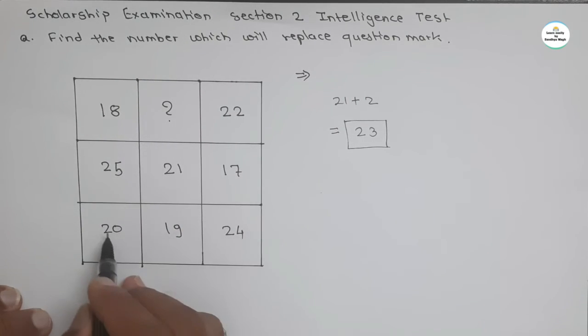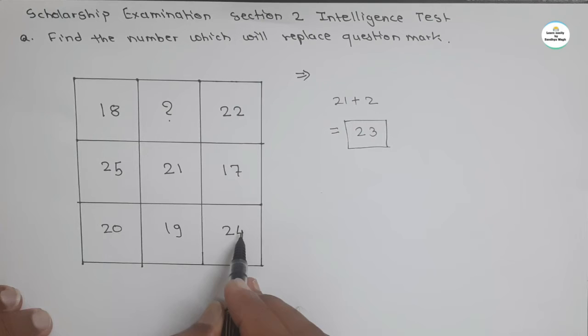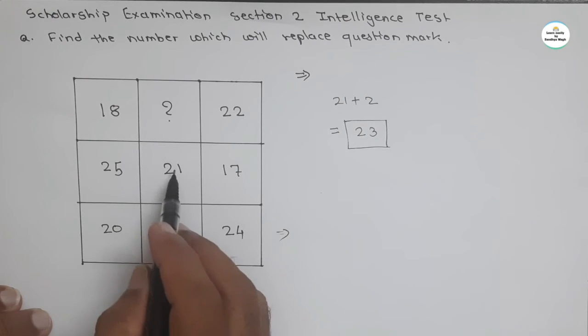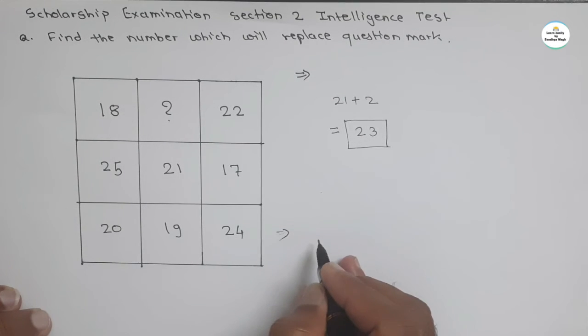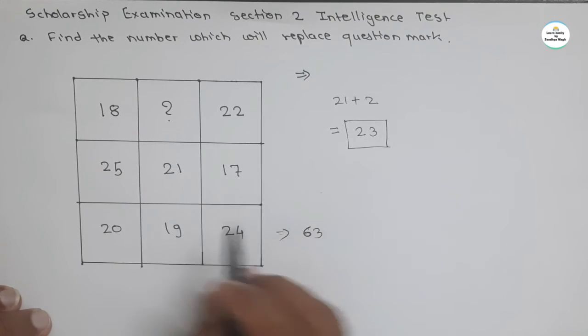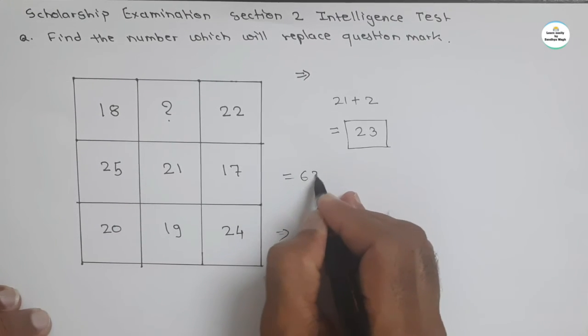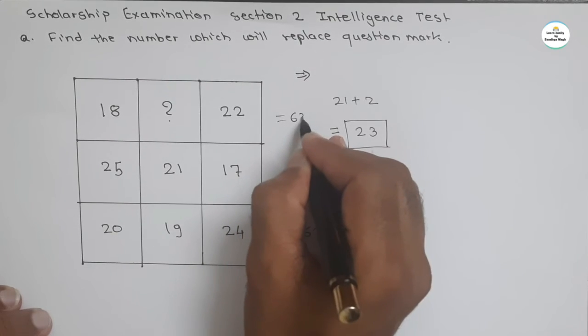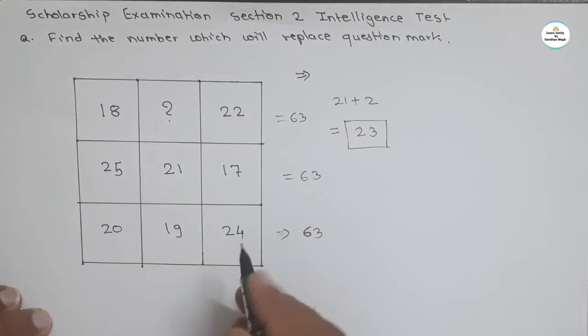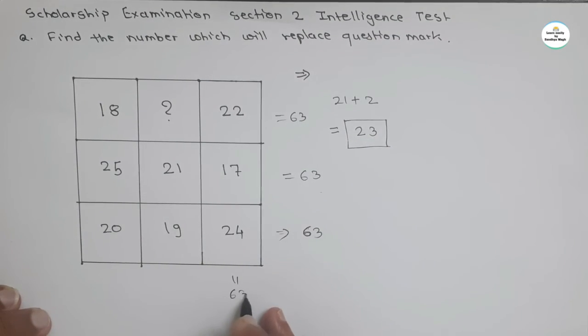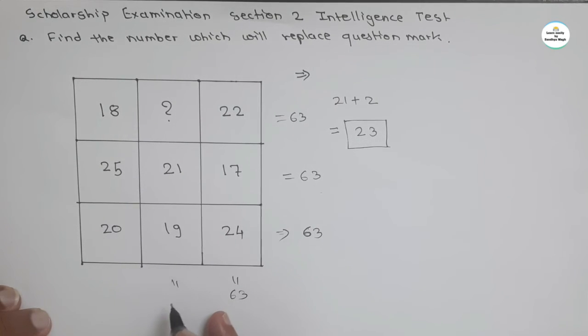If we add these three numbers, if we take the addition of these three numbers, we get 21 into 3, means we get 63. And summation is 63 for each row. There is also 63. Here also 63. This summation is also 63. For this line also 63. And for this line also 63.